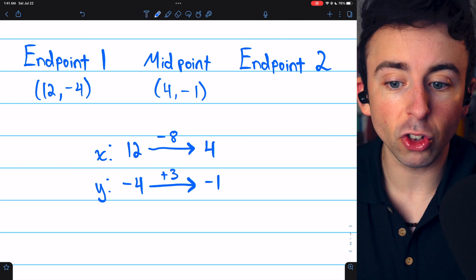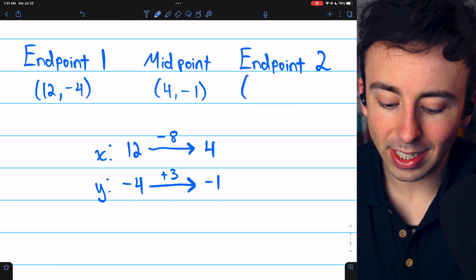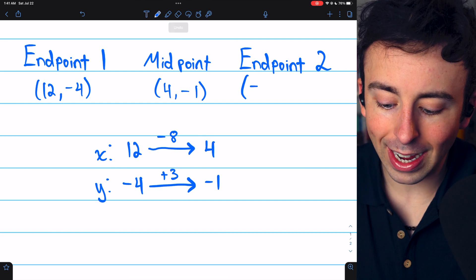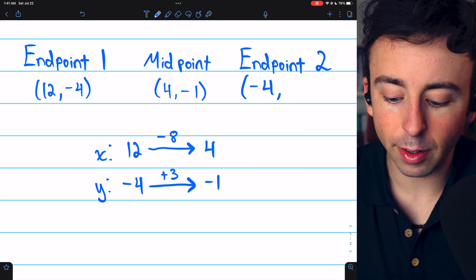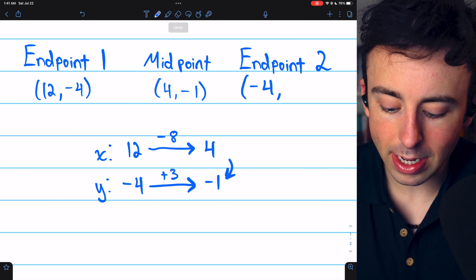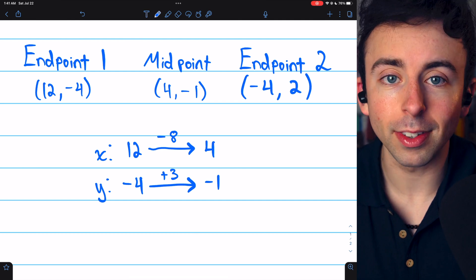Just repeat these changes to get the coordinates of the missing endpoint. Thus, to get the x-coordinate, we subtract an additional 8 from 4, and that gets us an x-coordinate of -4. And then for the y-coordinate, repeat this addition of 3 to -1. That gets us a y-coordinate of +2.